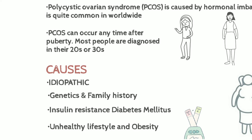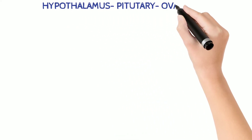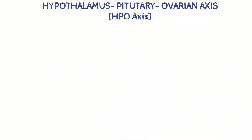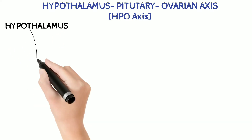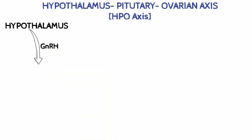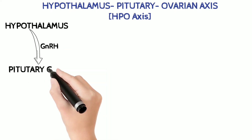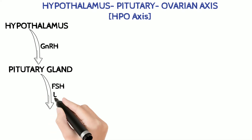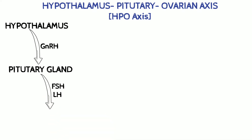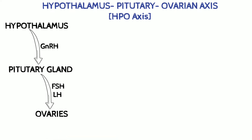Before learning about PCOS, let's review the hypothalamus, pituitary, and ovarian axis, or HPO axis. Our hypothalamus maintains homeostasis in the body and secretes GnRH, or gonadotropin-releasing hormone, which stimulates the pituitary gland, helping in the secretion of luteinizing hormone and follicular stimulating hormone. These activate the ovaries for ovulation and secretion of estrogen and progesterone.